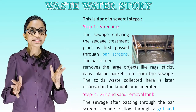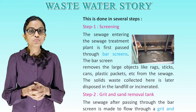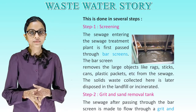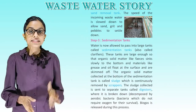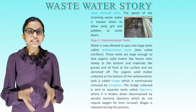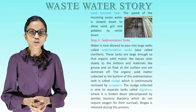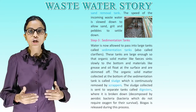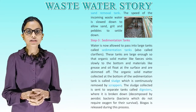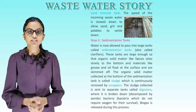Step 2 — Grit and Sand Removal Tank: the sewage after passing through the bar screen is made to flow through a grit and sand removal tank. The speed of the incoming wastewater is slowed down to allow sand, grit, and pebbles to settle down.